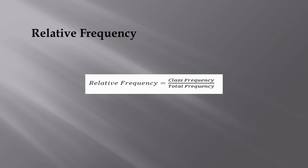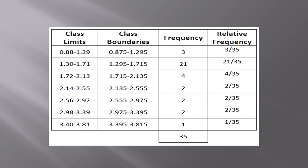The first one is relative frequency. You can obtain relative frequency by this equation. To find the class frequency, we should know about the class frequency values and the total frequency value. This is an example for relative frequency — here the first class frequency value